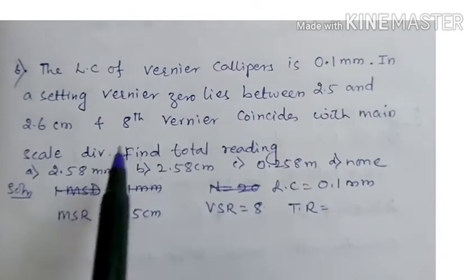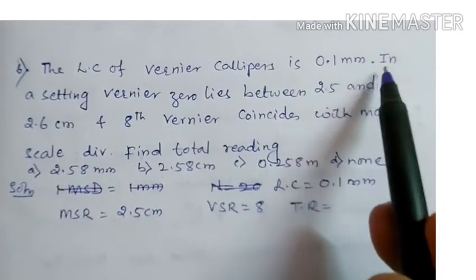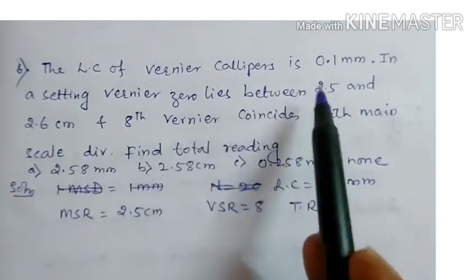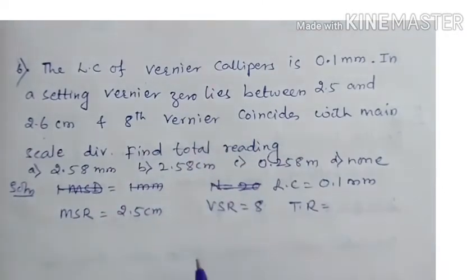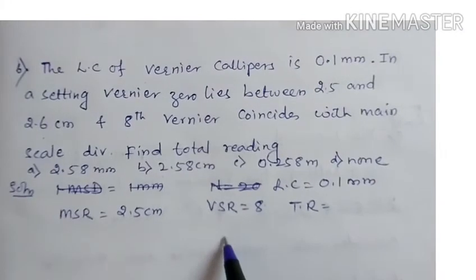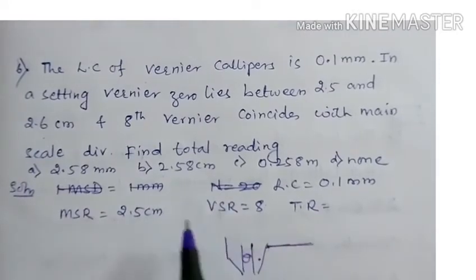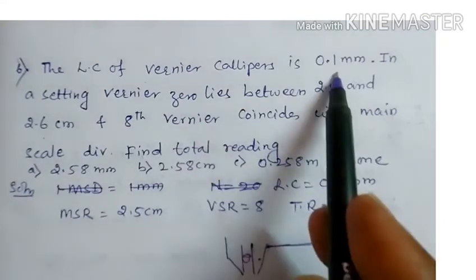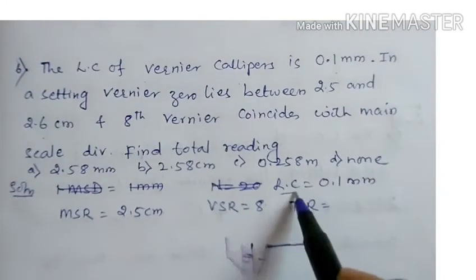Now this is the most important question. The LC of vernier calipers is 0.1 mm. In a setting, vernier zero lies between 2.5 and 2.6, and the 8th vernier division coincides. The LC is 0.1 mm — given.